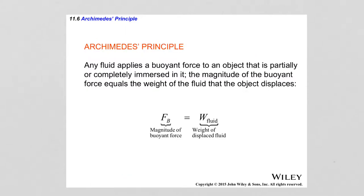Archimedes' principle states: any fluid applies a buoyant force to an object that is partially or completely immersed in it. The magnitude of the buoyant force equals the weight of the fluid that the object displaces. The buoyant force F_B equals the density of the fluid times the volume of the submerged object times gravitational acceleration.